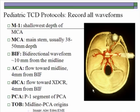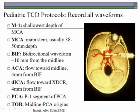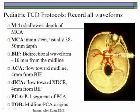In the pediatric TCD protocol, record all waveforms — it is better to have more information than less, and if a child becomes uncooperative you may not get the signal again. Begin by looking at the area of the anticipated bifurcation where you would usually have the strongest signal, which will help optimize your best temporal window. Then track the sample volume depth out to make sure you have traced the course of the MCA and haven't confused it with the posterior cerebral artery carrying collateral flow. Do all vessels to differentiate anterior from posterior circulation and clearly track the most suspicious vessel — the MCA and termination of the internal carotid.